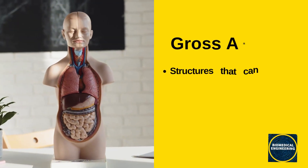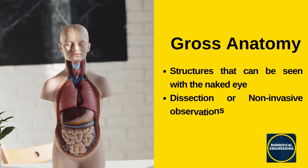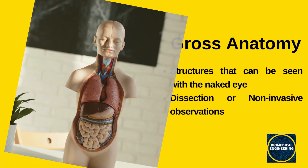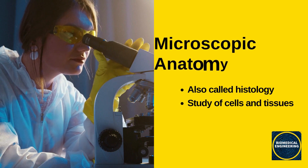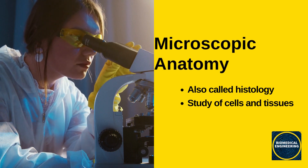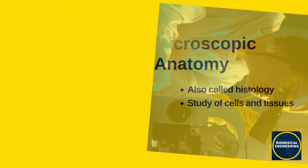Gross anatomy is the study of structures that can be seen with the naked eye, such as the heart and lungs. Microscopic anatomy is the study of structures that can only be seen under a microscope, such as cells and tissues.